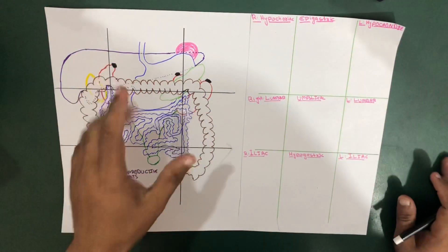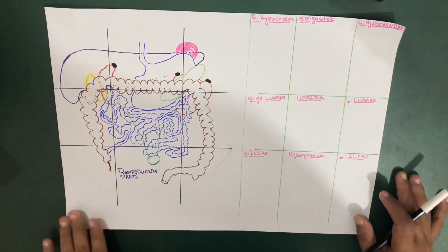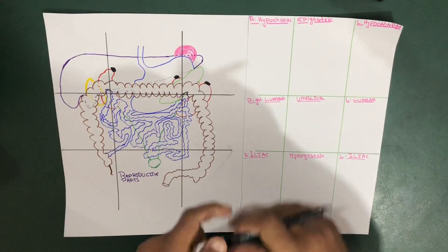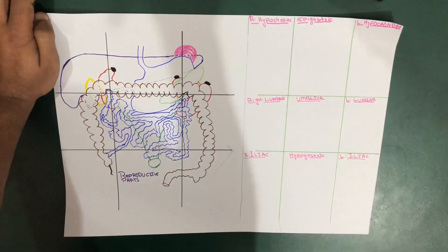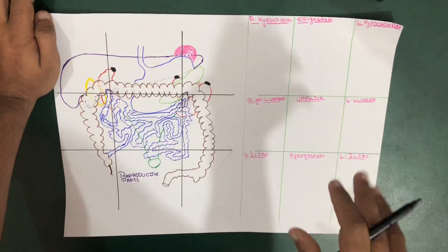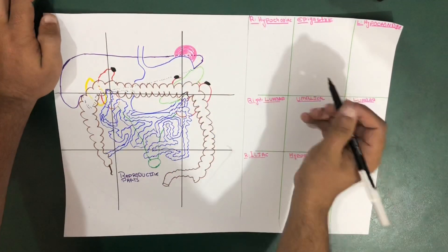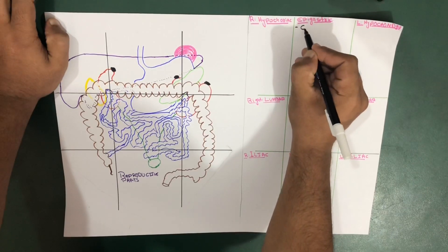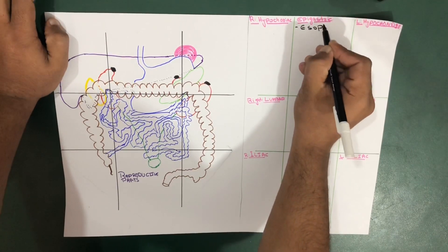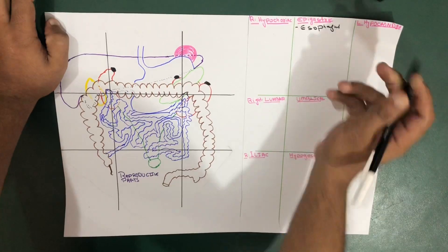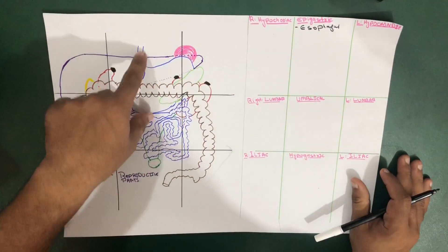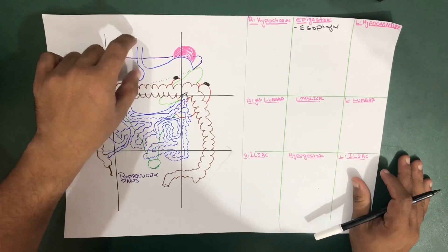Let's start from the esophagus. Remember, as we come downward, the esophagus only occupies one region in the nine abdominal regions, and that is the epigastric region. So you can mention that the esophagus is included in the epigastric region.